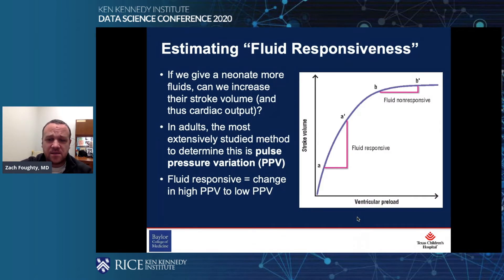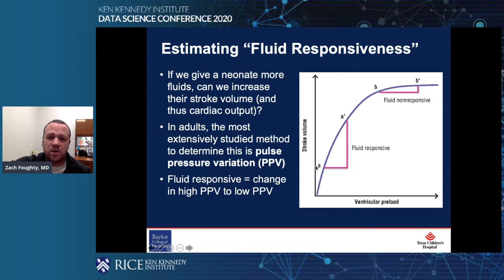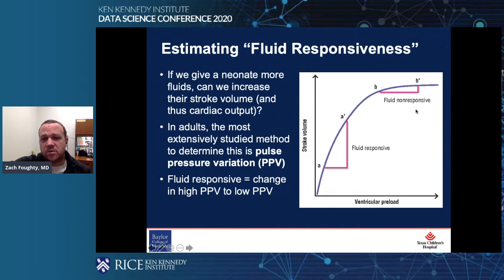When we talk about fluid responsiveness, here on the right is the Starling curve that looks at ventricular preload and stroke volume. Ventricular preload is how much the heart is filling, and stroke volume is how much you're able to pump out. As you increase preload, stroke volume will also increase to a certain point. You can fall off the curve and actually lose stroke volume if you have too much stretch.